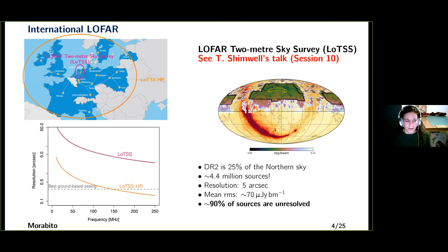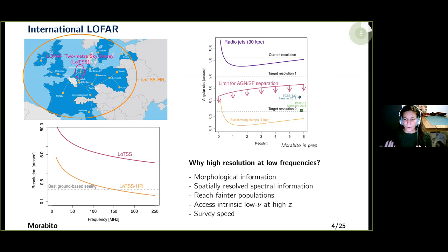But if you expand out to use the entire international array, you can actually beat the best ground-based seeing achievable with adaptive optics for optical telescopes — that's a factor of 20 improvement in resolution by simply using the rest of the array. With that you can start to resolve things: radio jets in nearby galaxies, star-forming clumps. You get morphological information which gives you spatially resolved spectral information, you can reach fainter populations, access lower rest frequencies at high redshift, and you have increased survey speed compared to telescopes with comparable resolution at higher frequencies because LOFAR has a larger field of view.